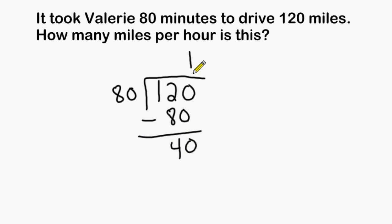If we place a decimal here and a decimal here, add a zero and drop it down, we may divide 80 into 400 which is a total of 5. Now we know that Valerie covered 1.5 miles in one minute.